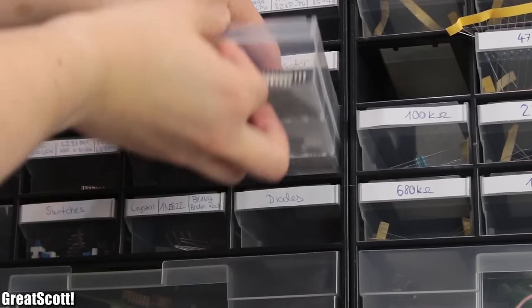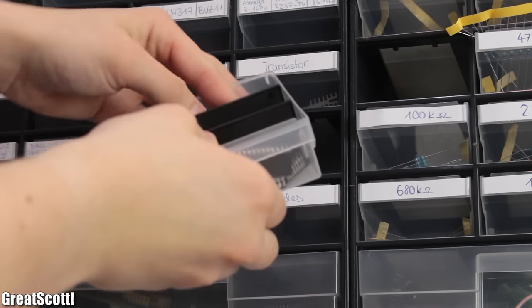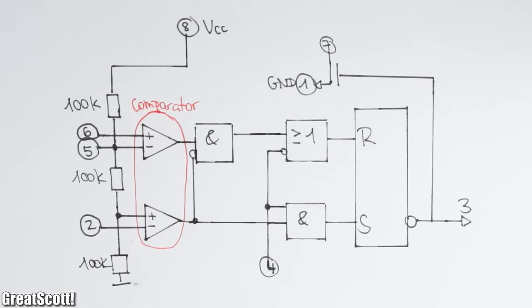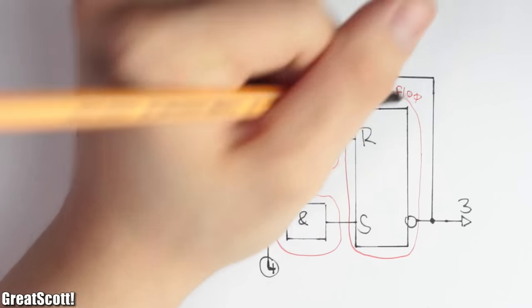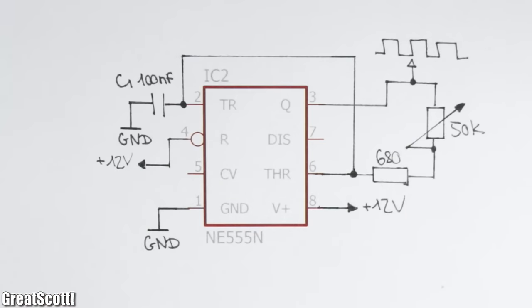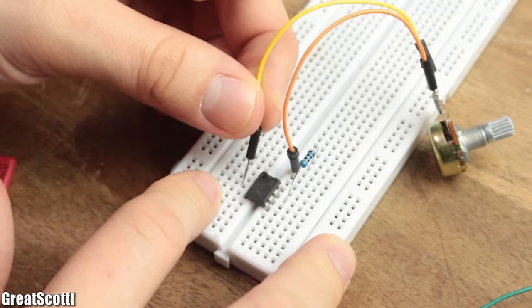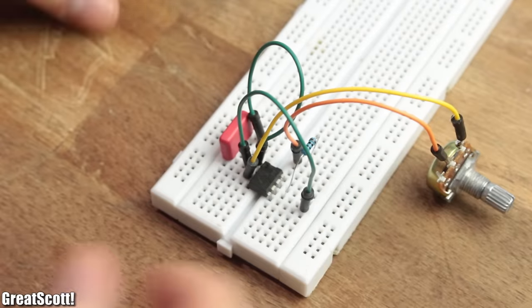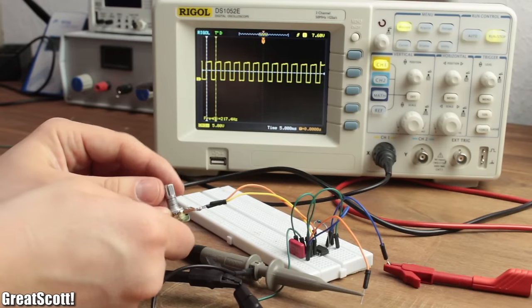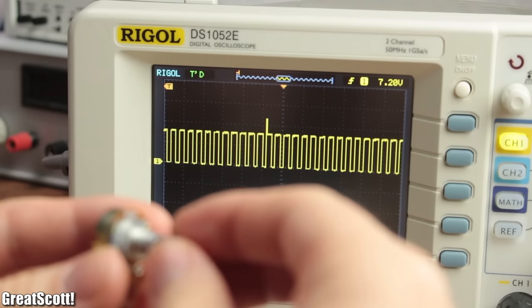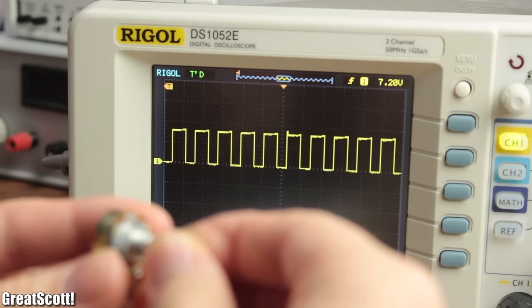An IC which also implements the same core idea is the always popular 555 timer. These consist of two comparators, two logic AND and one logic OR gates and an RS flip-flop. So not that easy to explain right now, but on the other hand super easy to use. By connecting a 100 nF capacitor, a 680 ohm resistor and one 50 kilo ohm potentiometer, we can create a stable and variable rectangle wave again by charging and discharging the capacitor periodically.